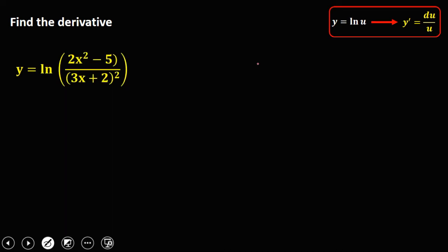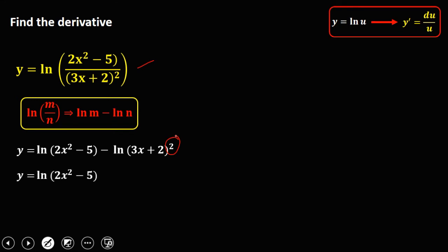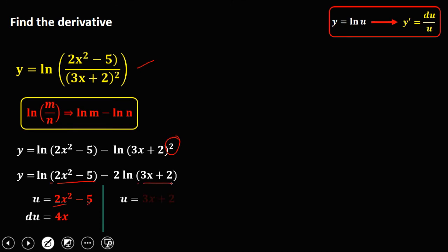For the next given, using the quotient property of logarithm — ln(m/n) equals ln m minus ln n — we rewrite as y equals ln(2x squared − 5) minus ln(3x + 2) squared. Using the power property, that's ln(2x squared − 5) minus 2·ln(3x + 2). For the first term, u is 2x squared − 5 and du is 4x. For the second term, u is 3x + 2 and du is 3.